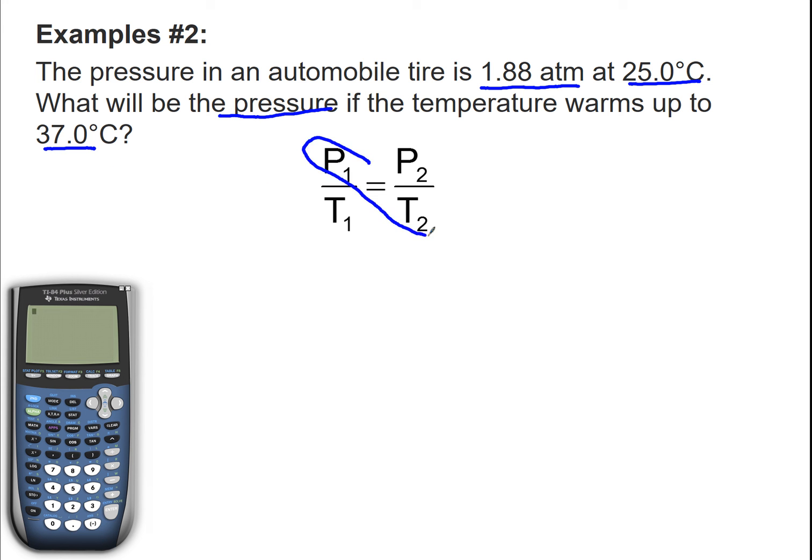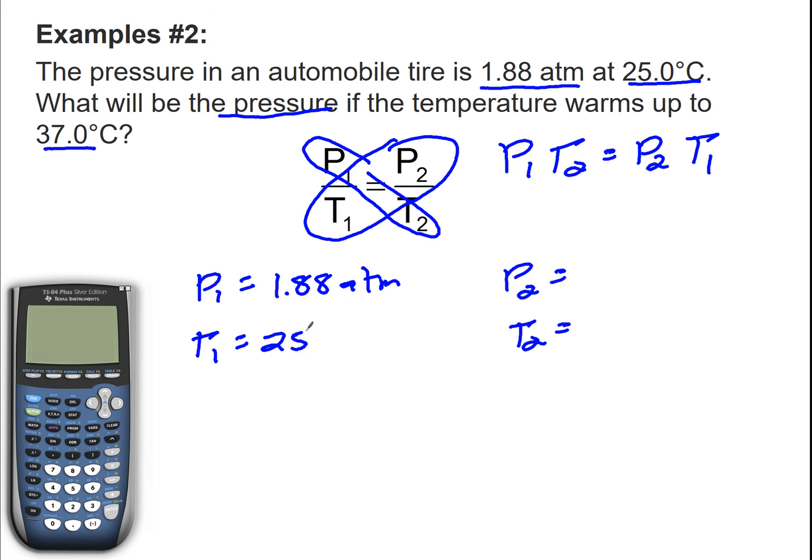I'm going to cross multiply my variables to get rid of the fraction. So P1 times T2 equals P2 times T1. I'm going to make a list of variables. P1 equals 1.88 atm. T1 equals 25 degrees Celsius. P2 is my X, and T2 is going to be 37 degrees Celsius.